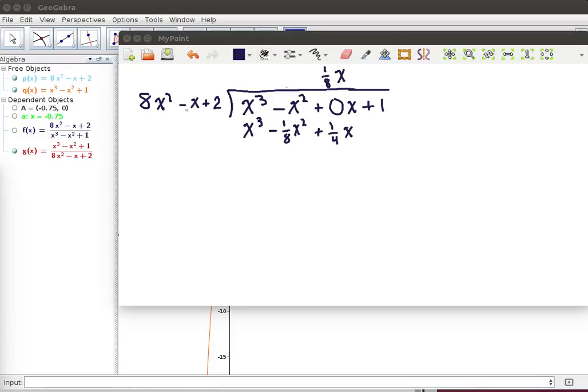1/8 x times -x gives us -1/8 x², and 1/8 x times the +2 gives us 1/4 x. Now we need to subtract. To keep track of this subtraction, I'm just going to change the sign of every one of these items and then add them.